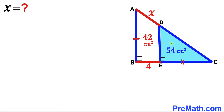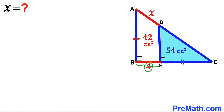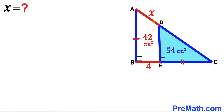Welcome to PreMath. In this video we have a blue shaded right triangle DEC fully confined in a big right triangle ABC. The area of the blue shaded triangle is 54 square centimeters, the area of trapezoid ABED is 42 square centimeters, segment BE is 4 centimeters, segment AD is represented by X, and side AB equals segment EC. Our task is to find the value of X — in other words, to calculate the segment length AD.